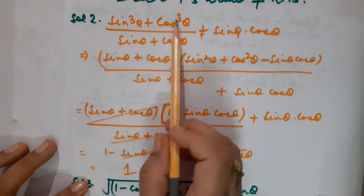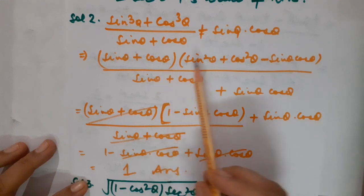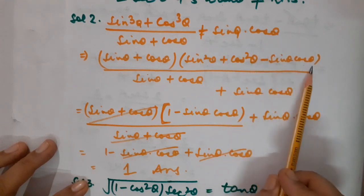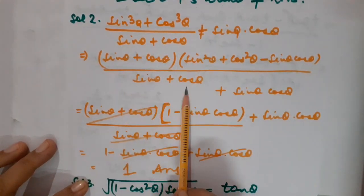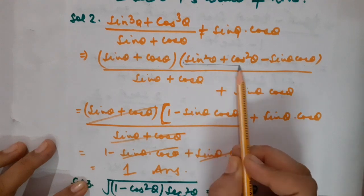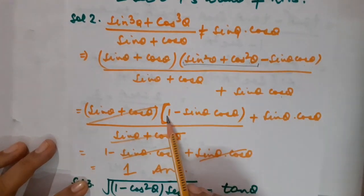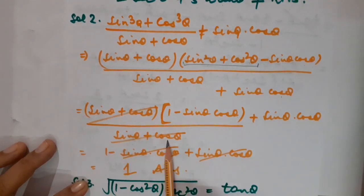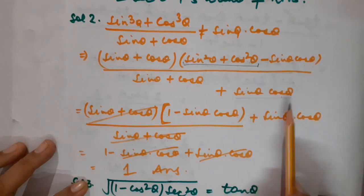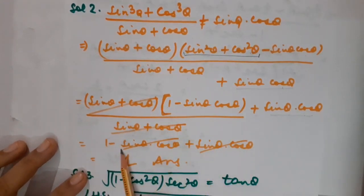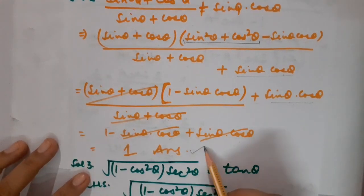Here I am going to apply the a³ + b³ identity: (a + b)(a² + b² - ab), which gives (sin θ + cos θ)(sin²θ + cos²θ - sin θ cos θ) at the numerator, with (sin θ + cos θ) at the denominator. Using sin²θ + cos²θ = 1, this simplifies to (1 - sin θ cos θ) / (sin θ + cos θ). Adding sin θ cos θ, the (sin θ + cos θ) cancels, and the sin θ cos θ terms cancel, giving the answer 1.